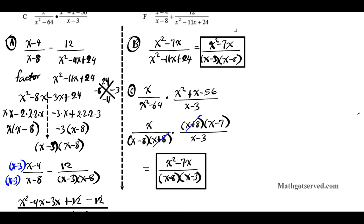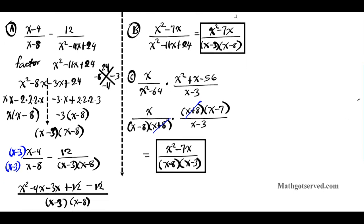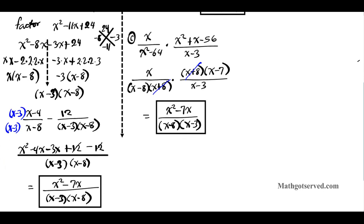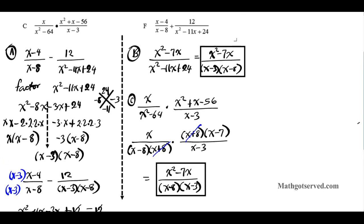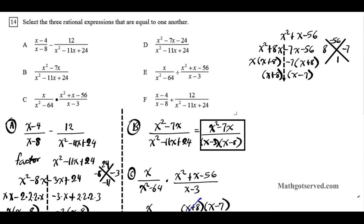Options A, B, and C are all identical. The question asks which rational expressions are equal to one another, and we can see that these three match: x squared minus 7x over (x minus 3)(x minus 8).